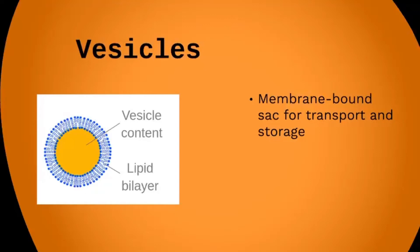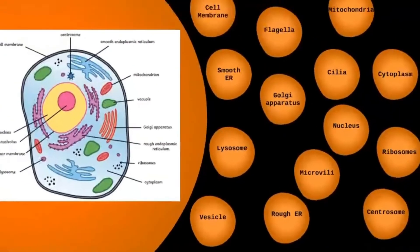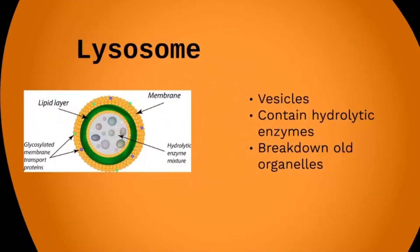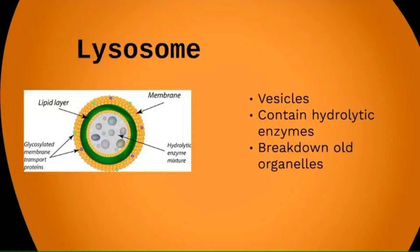Vesicles are essentially little packages — normally spherical and covered in a membrane — that act to carry substances within the cell. One specific type of vesicle is a lysosome. A lysosome contains hydrolytic enzymes, meaning it can assist in hydrolysis as we learned in the previous module. A lysosome is covered in a lipid bilayer membrane, and these are important for breaking down old organelles within the cell.